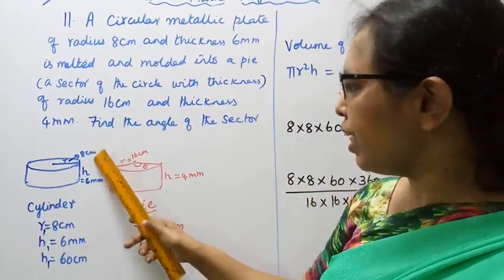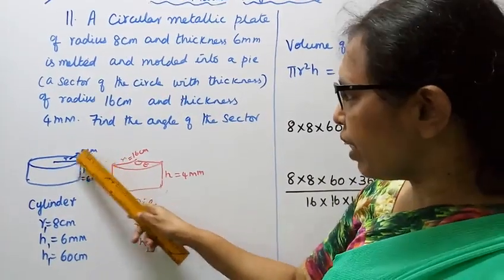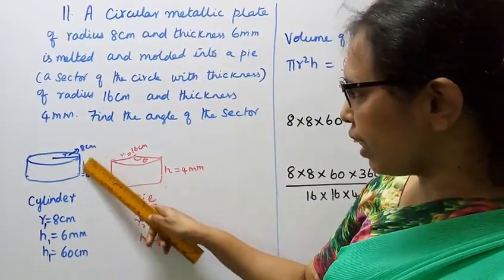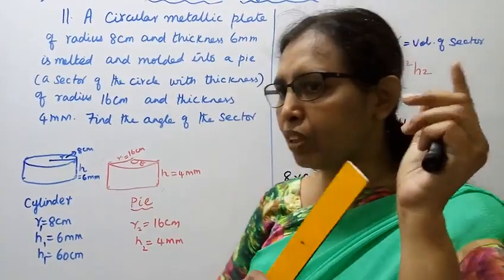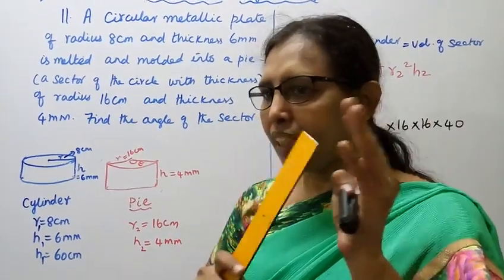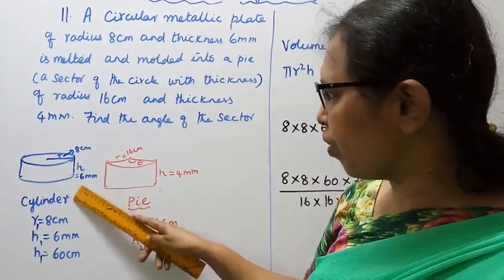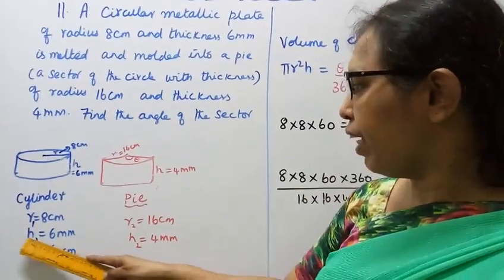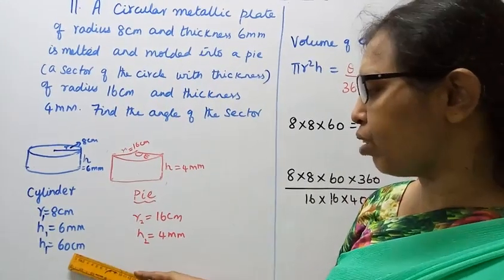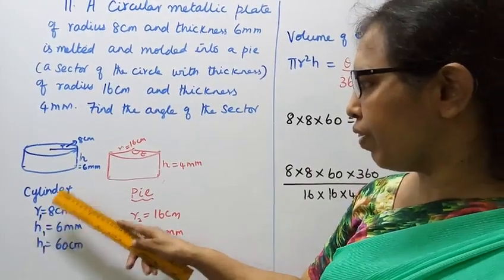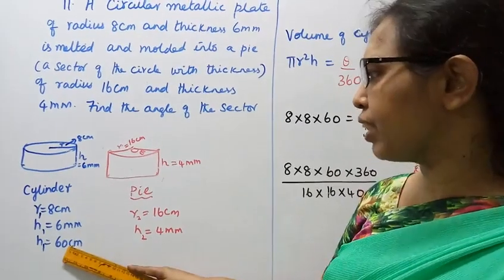The cylinder radius is 8 cm. This radius is 8 cm. The thickness is the height. Thickness is 6 mm, so the height is 6 mm, which is 0.6 cm. For the cylinder, R1 equals 8 cm, H1 equals 0.6 cm.